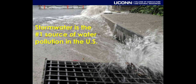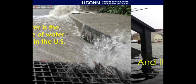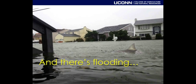The hard surfaces — cement, asphalt, roofing — prevent water from percolating into the soil and cause water quality and quantity problems. As far as quality, stormwater is the number one source of water pollution in the United States according to the EPA, and that runoff contains a lot of pollutants. As far as quantity, we've had a lot of well-publicized flooding events with some of the big storms over the last couple of years.